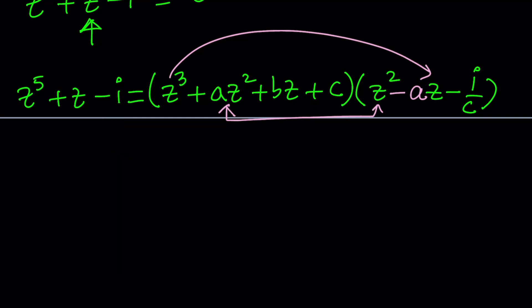Now, if you distribute everything, you're going to get a lot of terms. For example, you're going to get z to the fifth, but we already have that. That's all good. Z to the fourth canceled out, so we're good. But let's go ahead and focus on z cubed, z squared, and z and constant term.